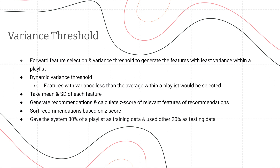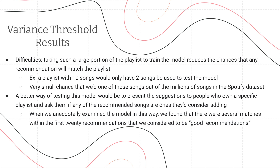For the next method, we used variance threshold. We used forward feature selection and variance threshold to generate the features with the least variance within a playlist. We took all the features of the songs in a playlist — such as danceability, loudness, tempo, etc. — and found the variance for each feature, and then found the average variance across all features. For any feature with a variance less than the average variance, we selected it as an important feature. We then generated recommendations using the Spotify API, and using the mean and standard deviation of each feature, we calculated the z-score of each recommendation against the relevant features and sorted the recommendations based on z-score. We gave the system 80% of a playlist as training data and the other 20% as testing data.